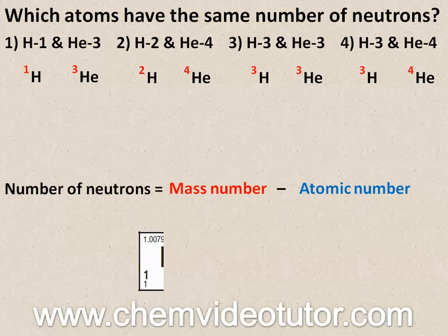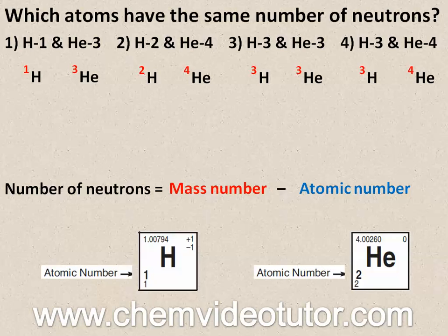To get the atomic number, just look up the elements in the periodic table and find the bold number at the bottom left.